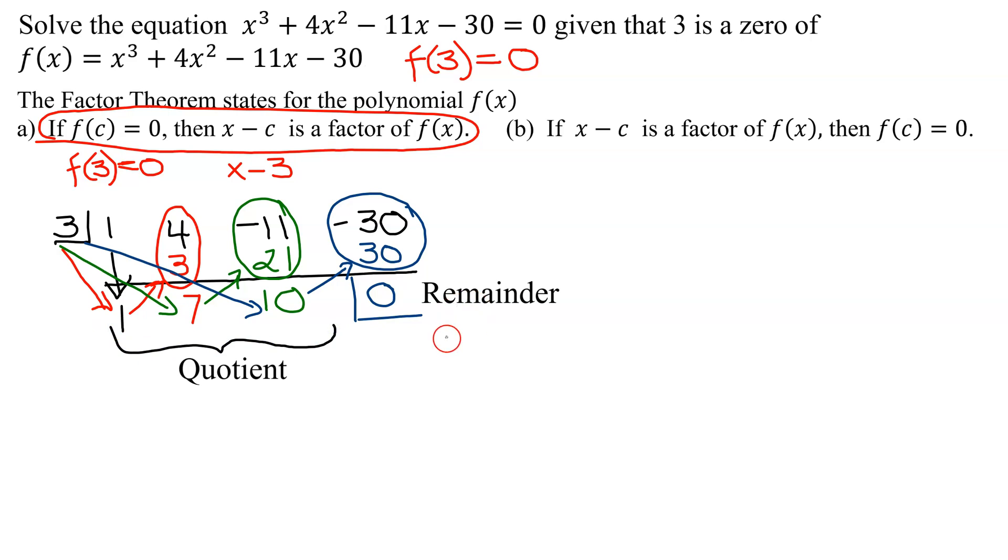The remainder is equal to the function evaluated at this number. So we've just shown that f(3) = 0. So we just reaffirmed what we were given.